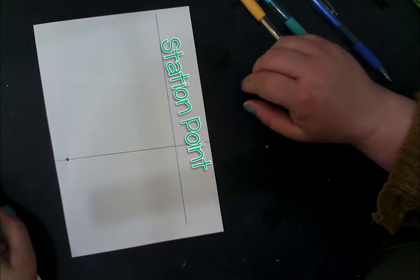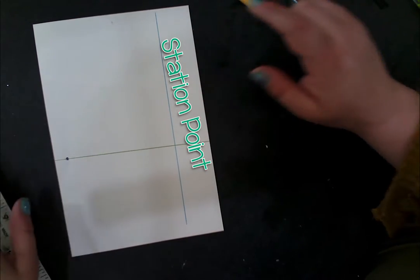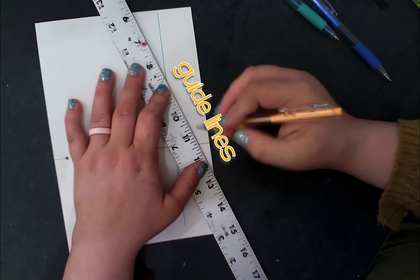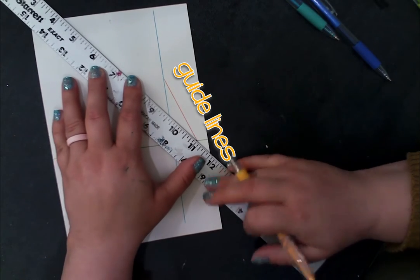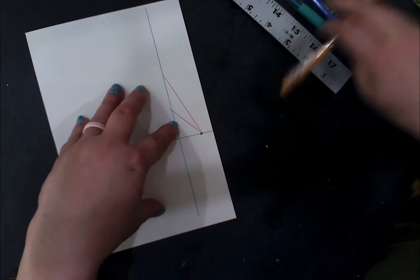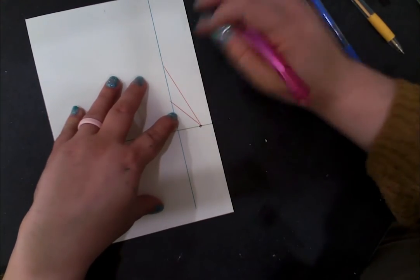A station point is the corner of your shape, so I'm going to add my first normal guideline onto the vanishing point. Since this is my station point, that tells me that's the corner of my rectangular prism.